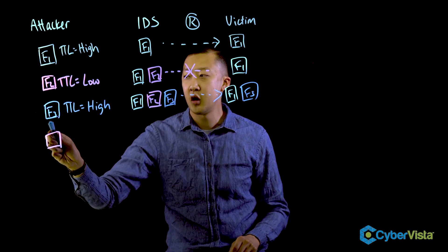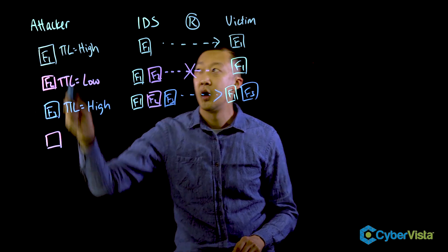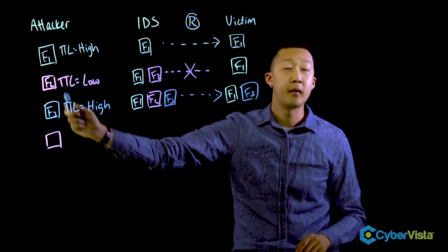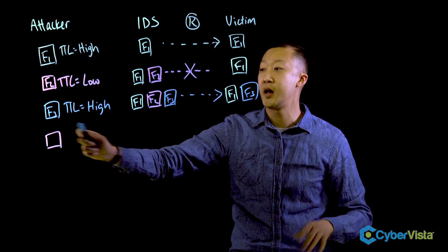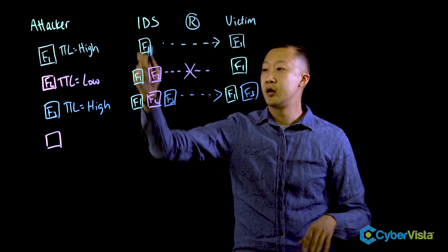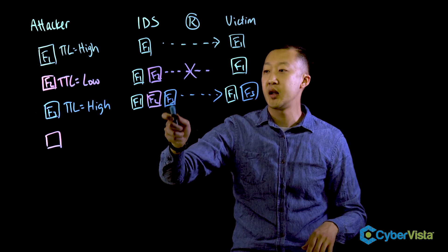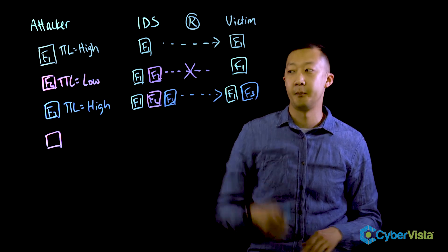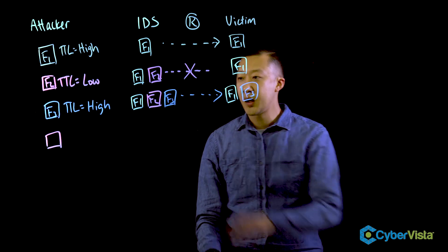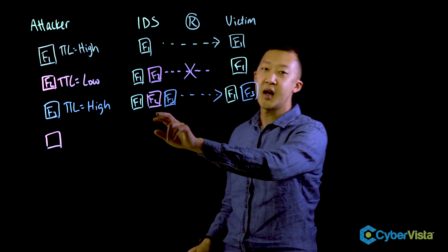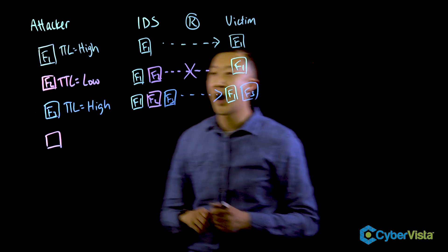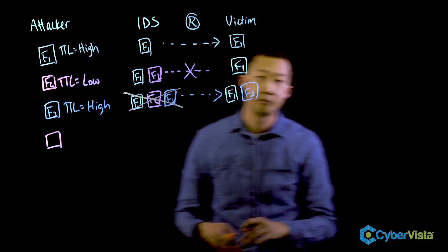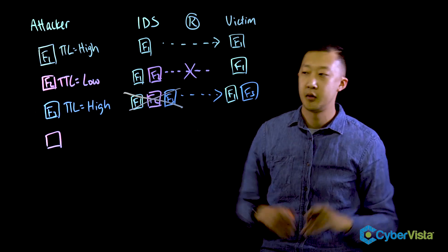With the third fragment, the attacker will again set a high TTL value, this time using real data. It'll go to the IDS and ultimately make it to the victim. But because the IDS saw fake data in fragment two, it essentially says, oh, no big deal.